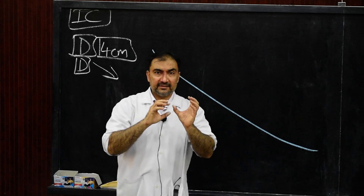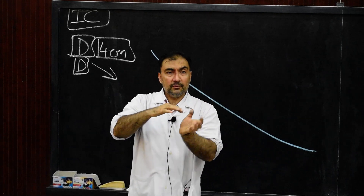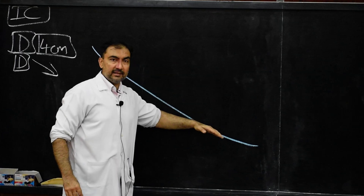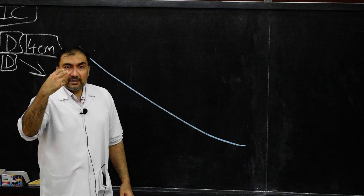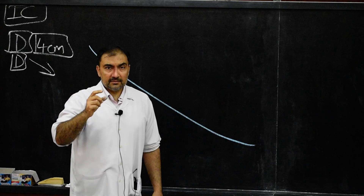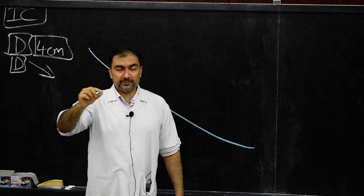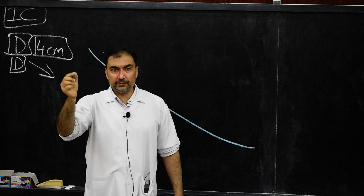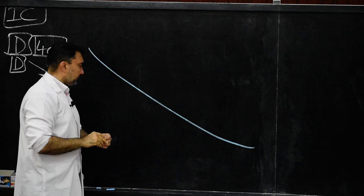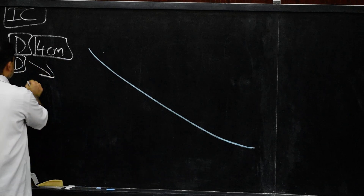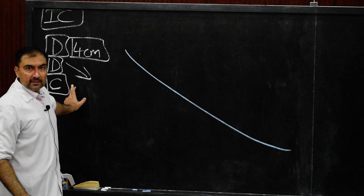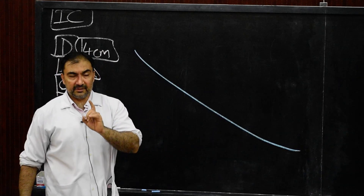Now we come to the contents. There will be passage of the spermatic cord in males and the round ligament of uterus in females. So the spermatic cord will pass and the round ligament of uterus will pass through the inguinal canal.